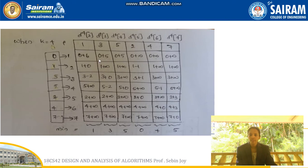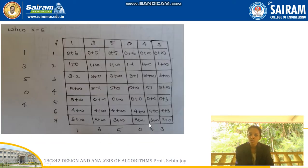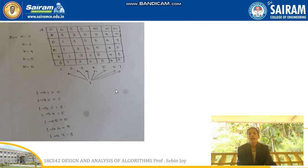For k=4, input is 0, 1, 3, 5, 2, 4, 7. We fill the matrix again — zero plus cost(1,2) gives 6, and so on. We find the column-wise minimum for k=4, which becomes the input for k=5. For k=5 we repeat the process again, getting the input for k=6: 1, 3, 5, 0, 4, 3. We continue until k=6.